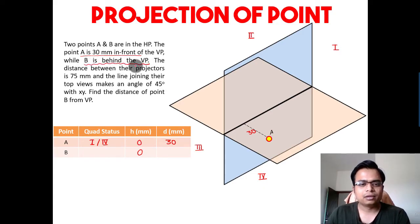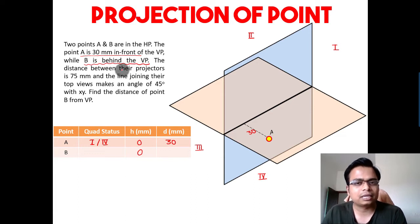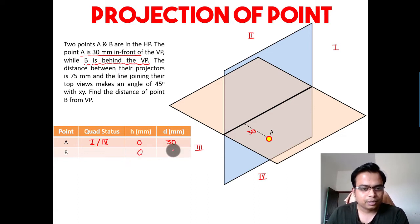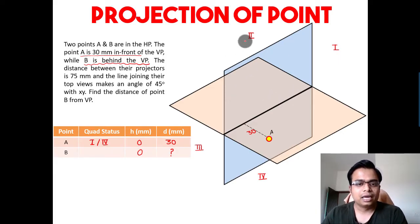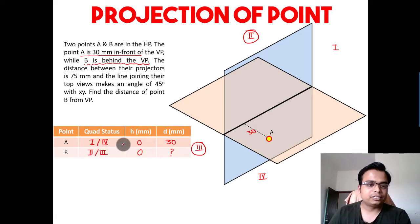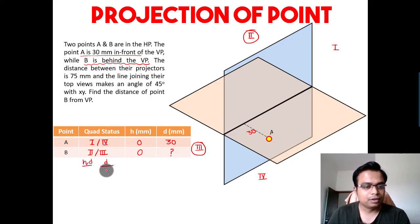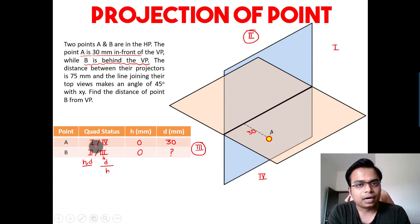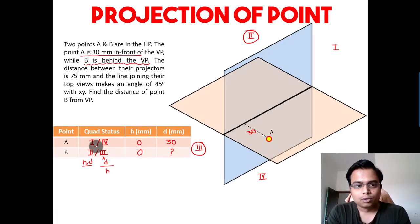Point B is behind the VP, but how far behind the VP is not given to us — so let me make a question mark. If it is behind the vertical plane, we have two options: it could be in the second quadrant or in the third quadrant. Both options are correct. It doesn't matter which HD principle you follow — whether H above the XY line or D above and H below for the third quadrant — both will land you in the same projection diagram.